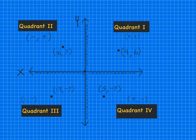And so you can see all of the points, how they work is positive, positive, negative, positive, negative, negative in quadrant three. And positive, negative in quadrant four.